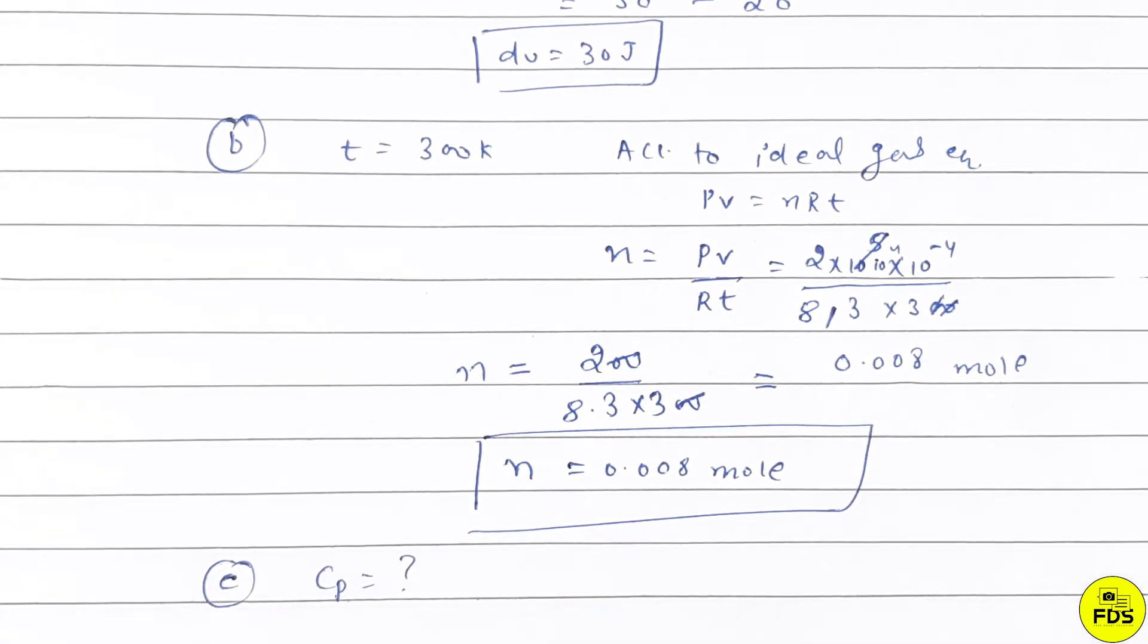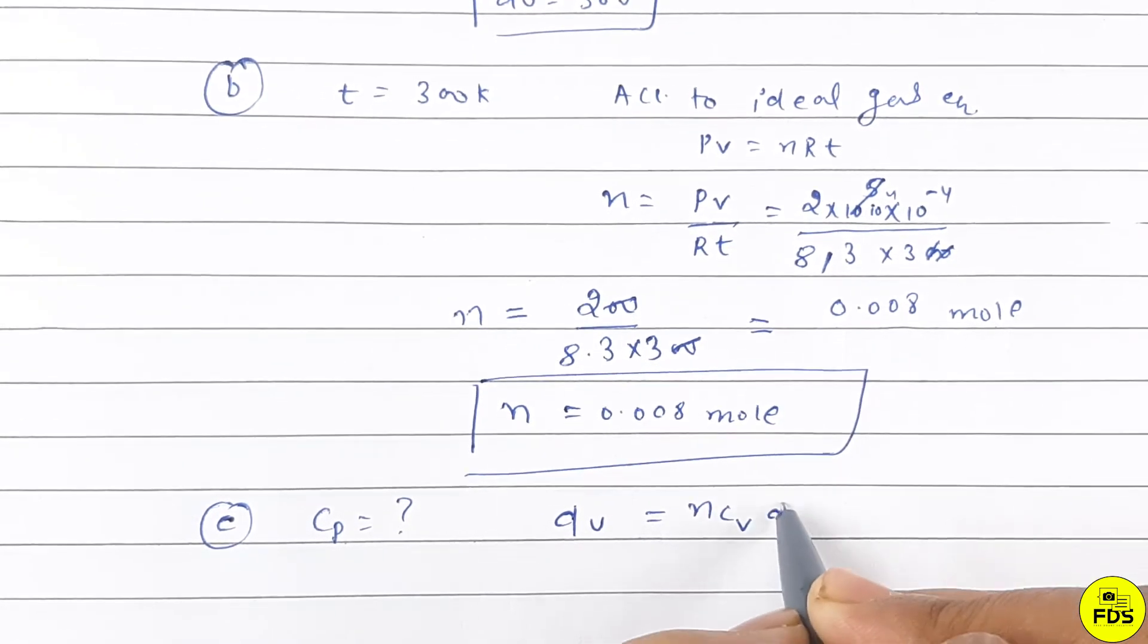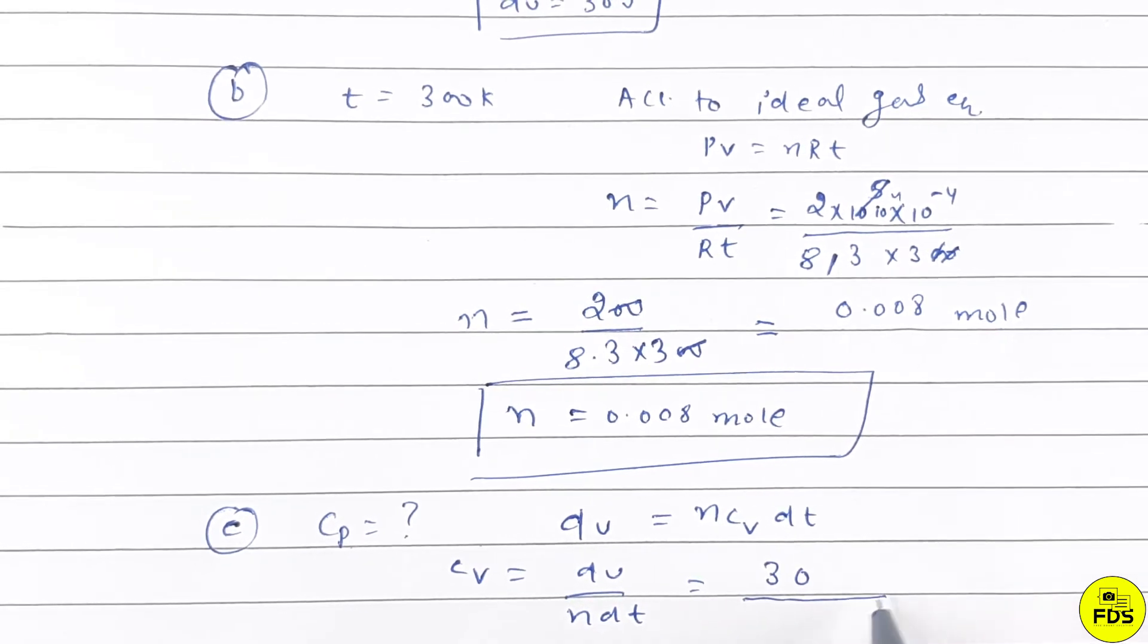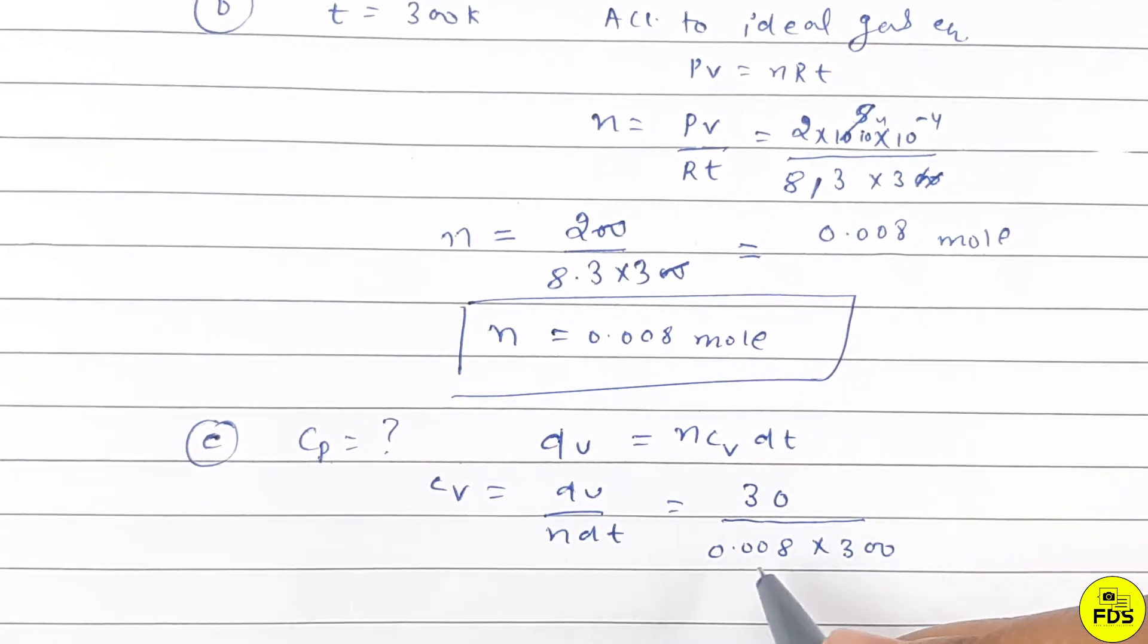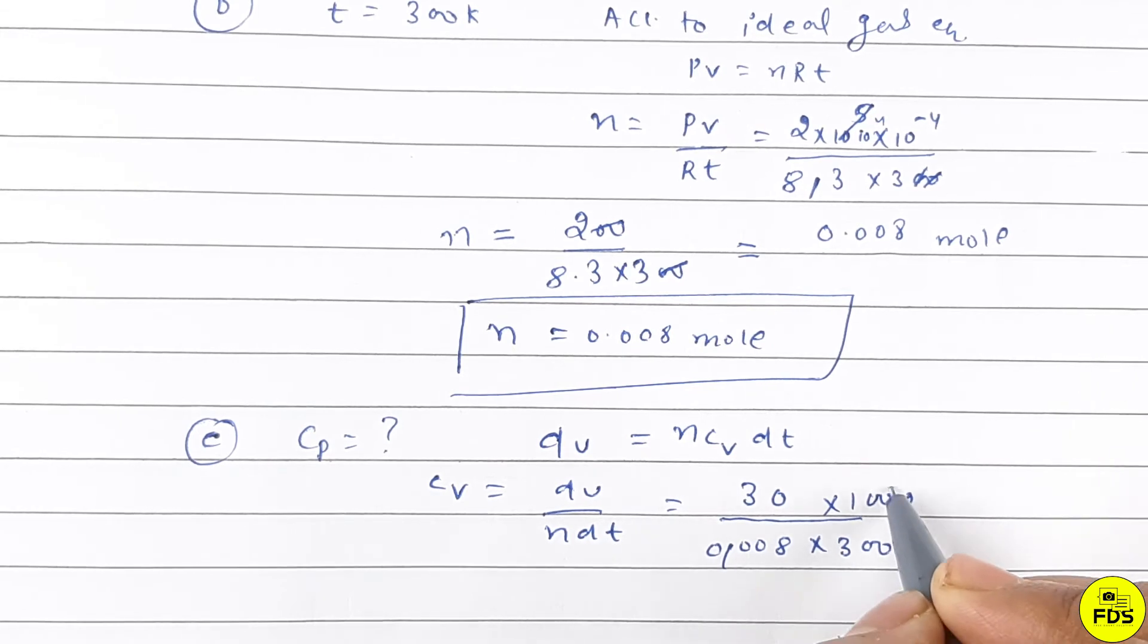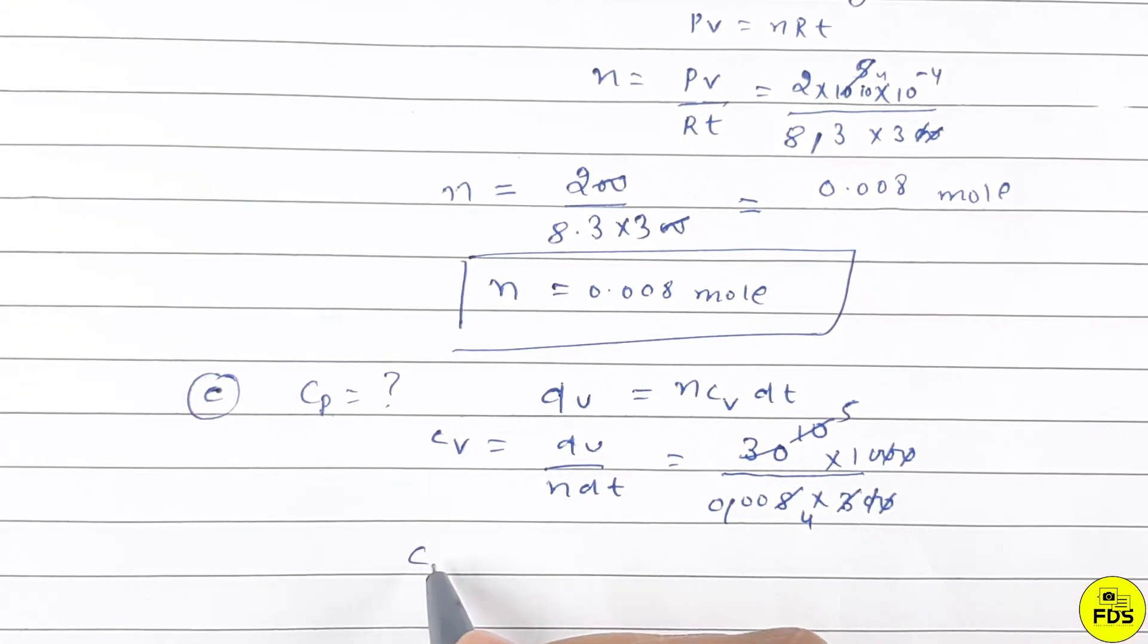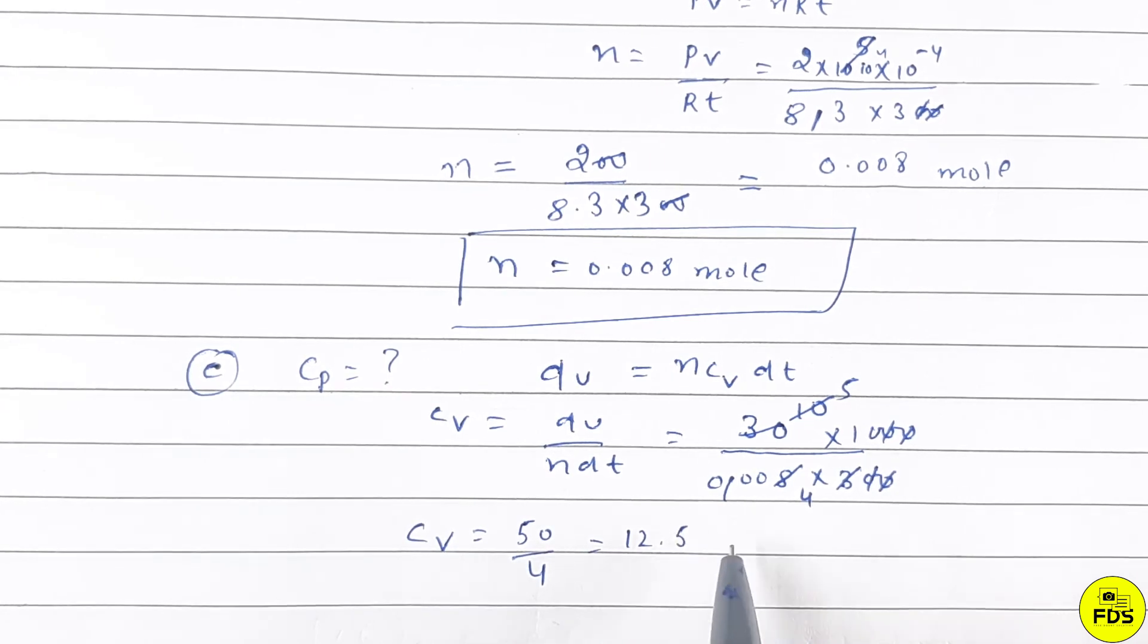In part C they asked for molar heat capacity at constant pressure, meaning CP. We have n equals 0.008 and change in temperature is 300 Kelvin. Using the heat capacity relation, CV equals 50 over (n times delta T) equals 50 divided by 4, which equals 12.50.